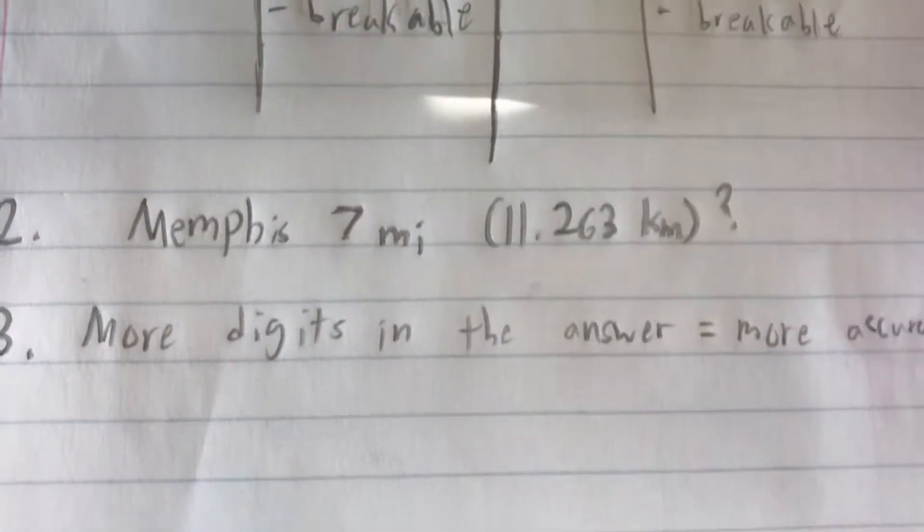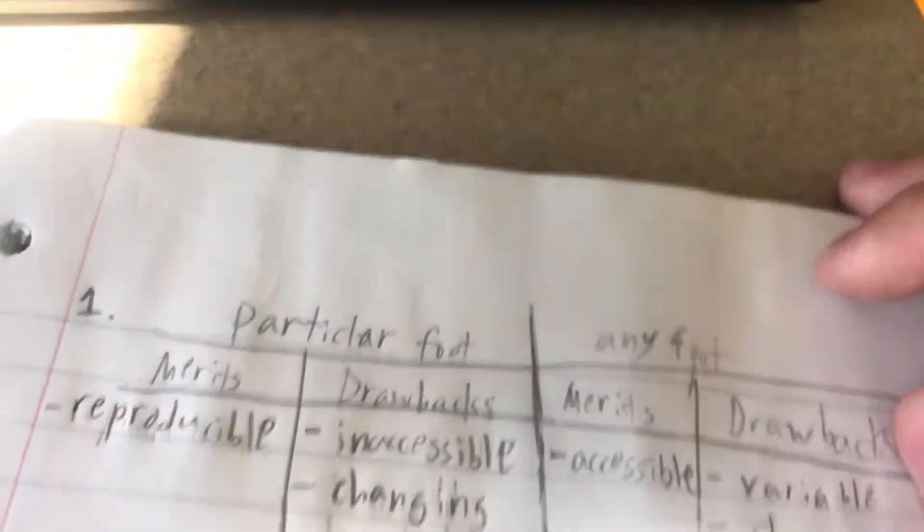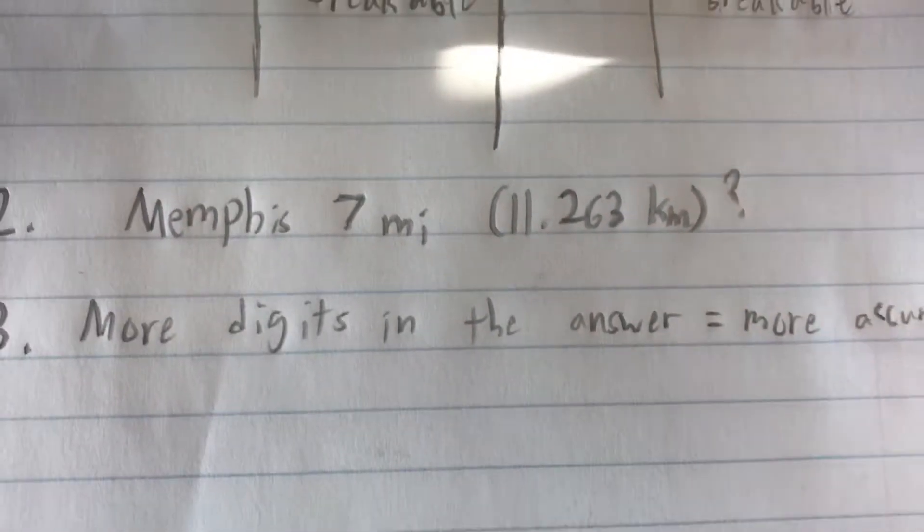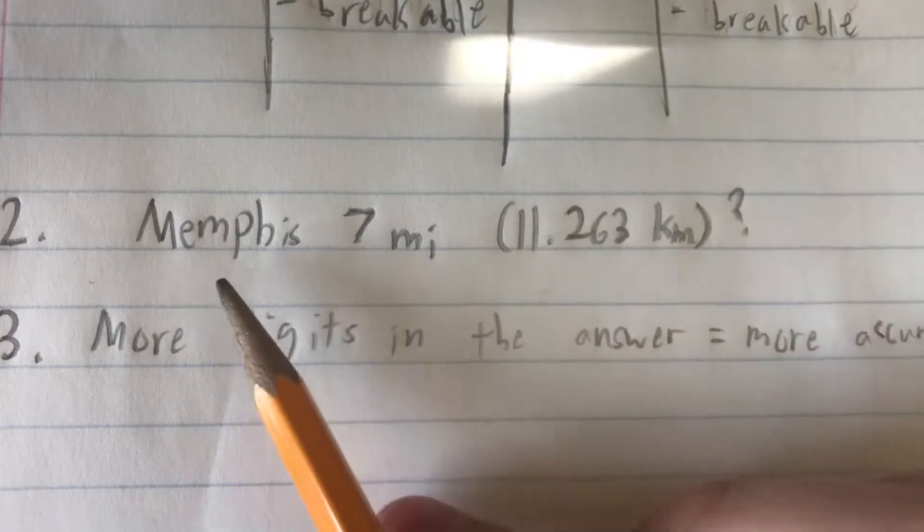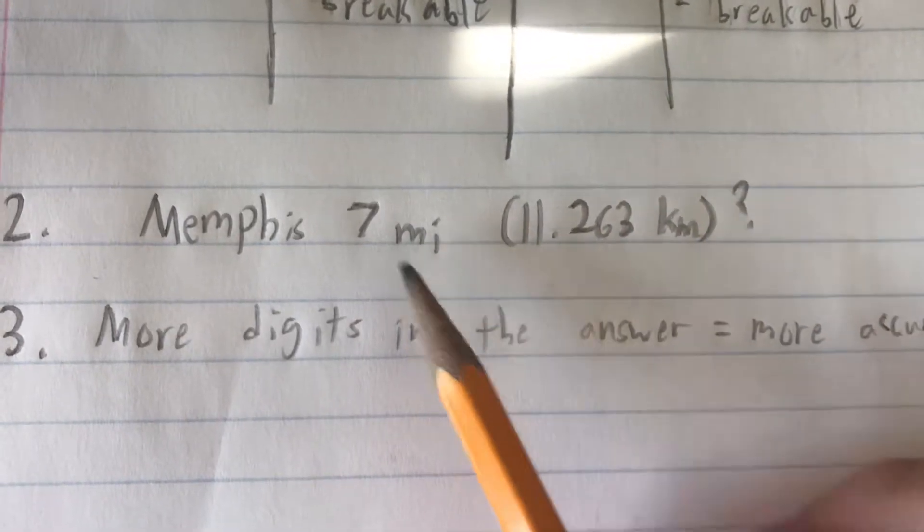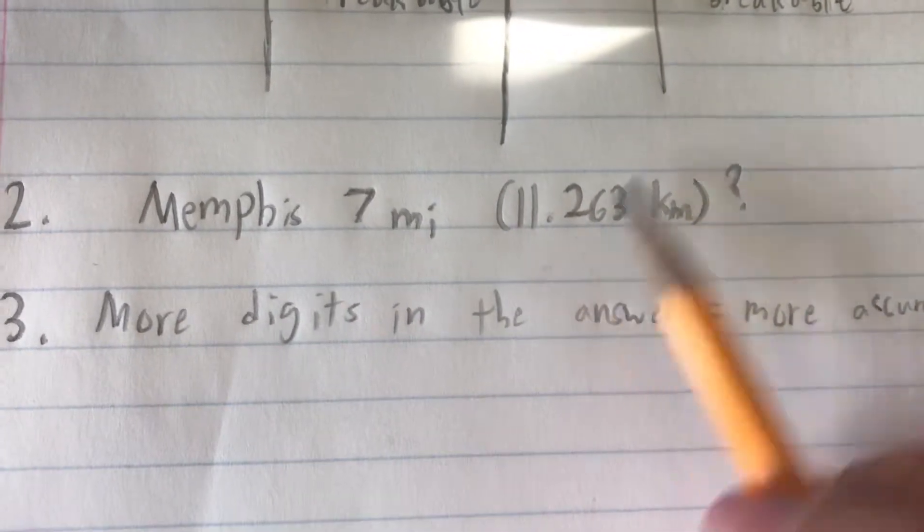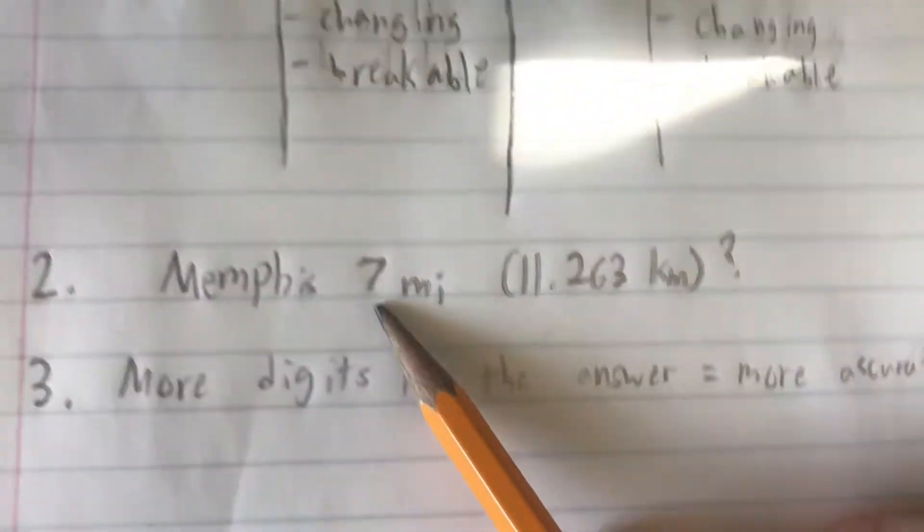But this question also does bring up a pretty good point, much like the last one. Because in this case, we're given two different measurements meant to represent the same thing, but both numbers are at totally different orders of magnitudes.